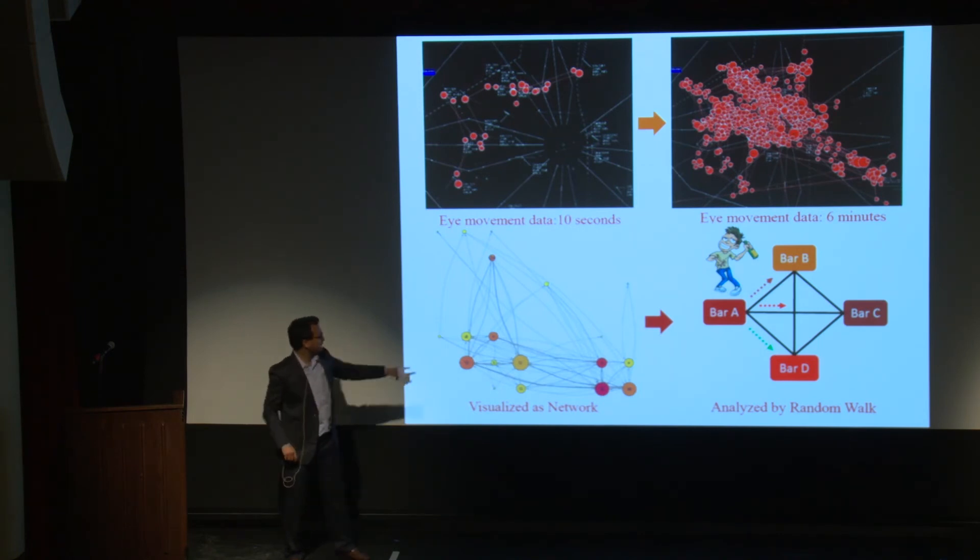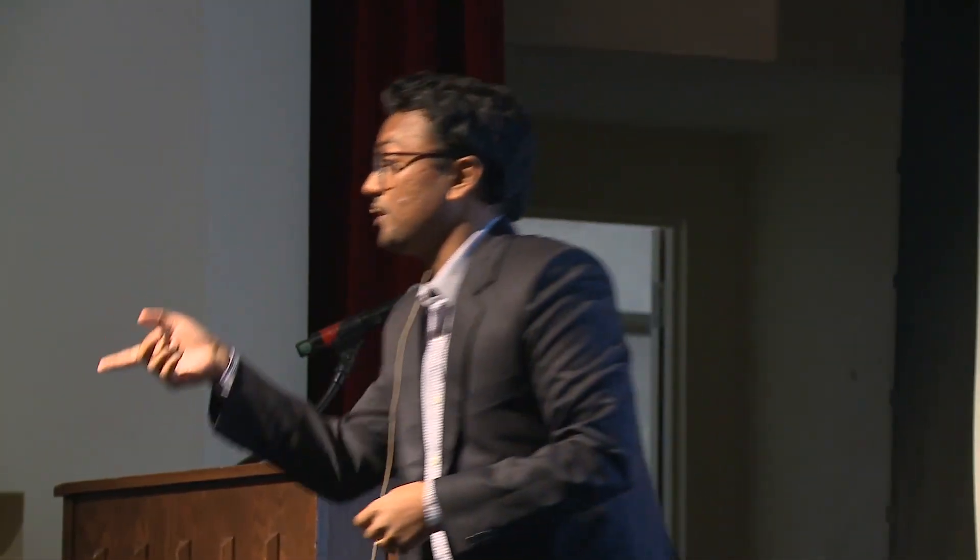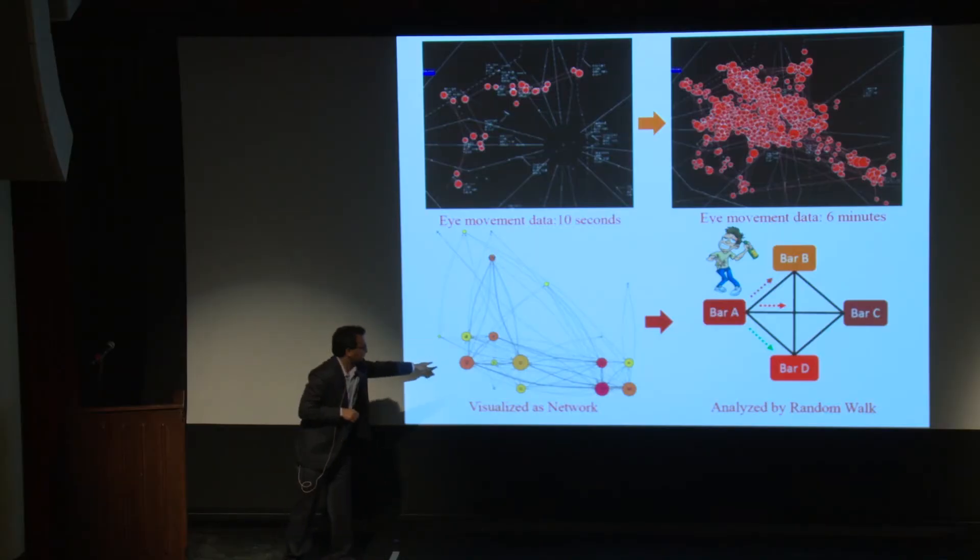Now, imagine this network as a network of bars, and a drunk man searching for drinks over one bar, hopping to another, searching for his favorite drink. Now, imagine the drunk man as the eyes of the controller, and the bars to be the aircraft. Such a phenomenon is called a random walk.